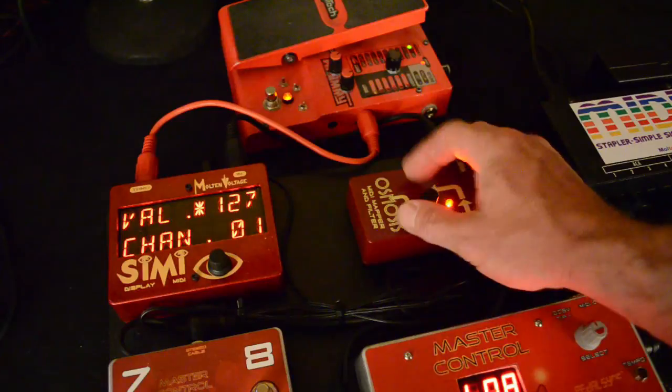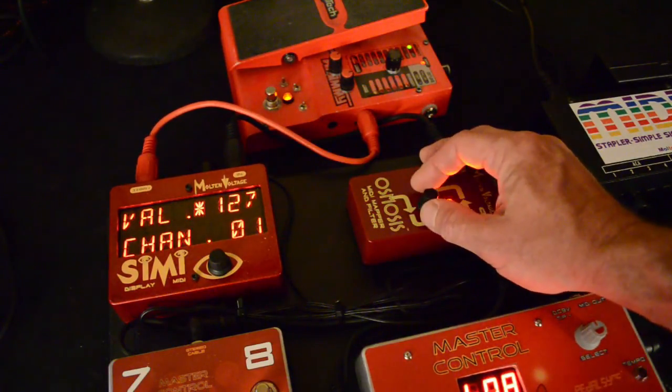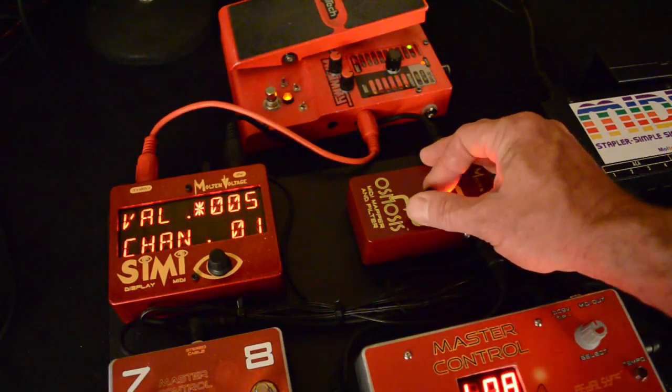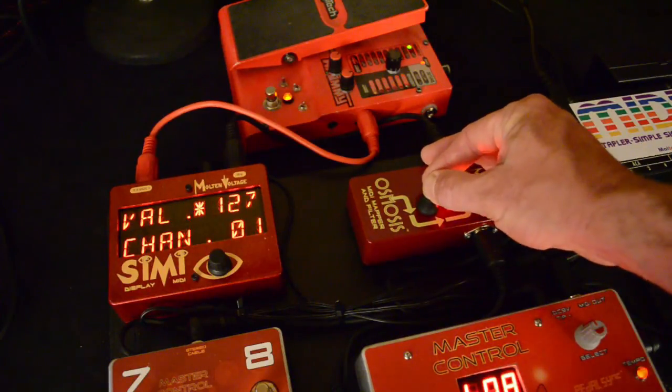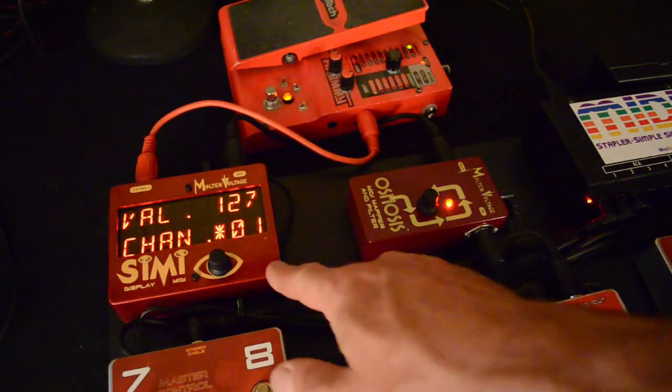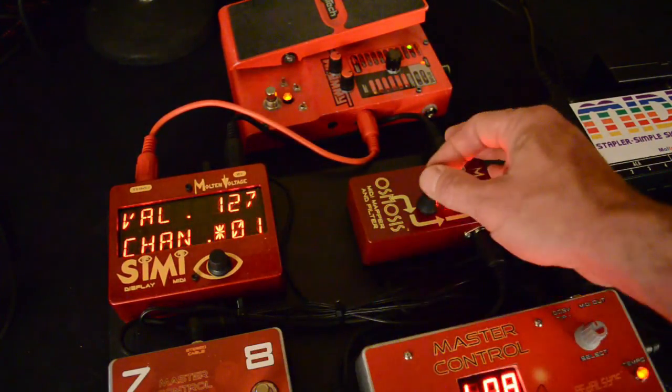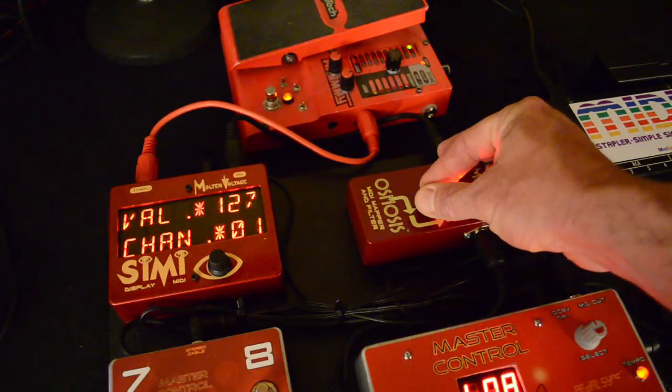And then the value of the controller, the default is 127. Obviously, you can set that wherever you want, and then you can send out each of these 16 Control Changes on separate MIDI channels as well.